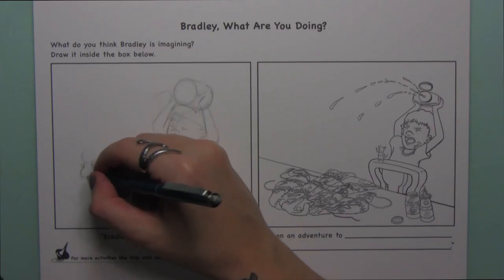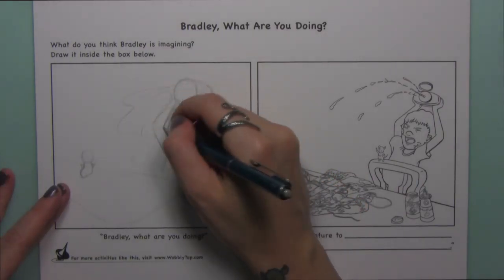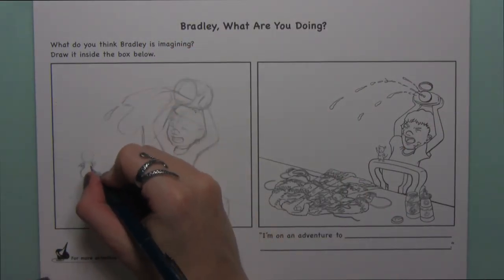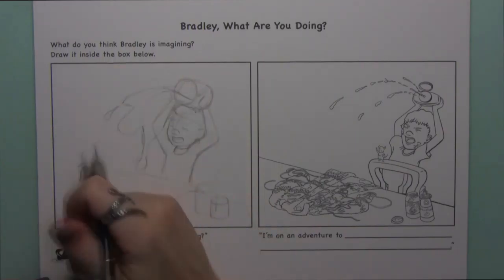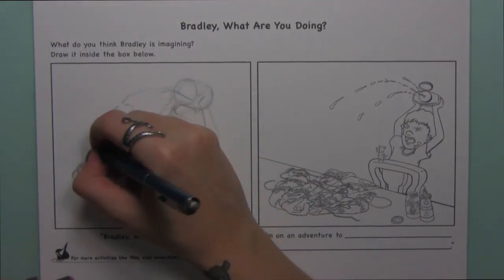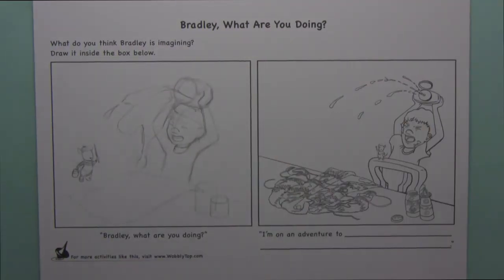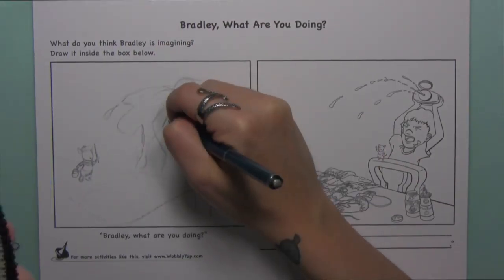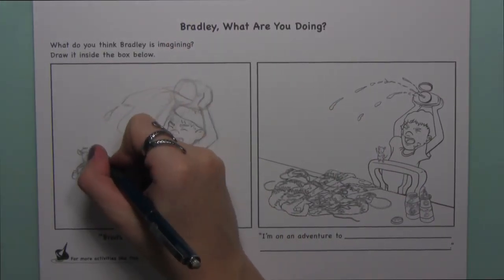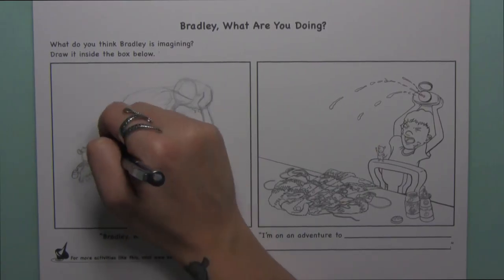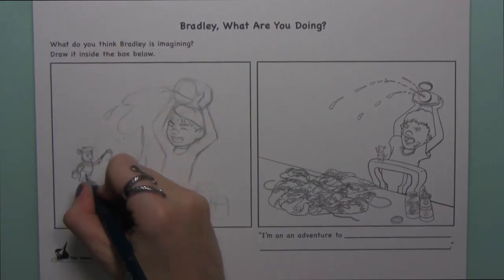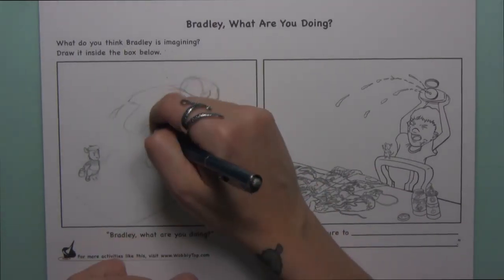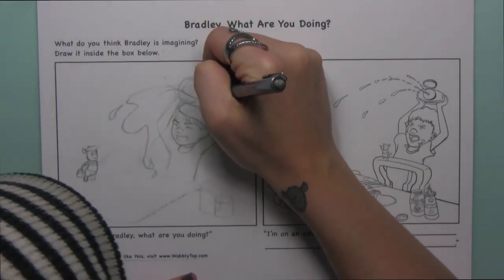For those of you who don't know, Wobbly Top's first book, Bradley What Are You Doing?, is a story about a mischievous little boy named Bradley and the adventures that he goes on in his imagination and the trouble that he gets into in the real world because of them. The setup of the book is you see one page showing the adventure Bradley's on in his imagination, then his dad says 'Bradley what are you doing?' and you turn the page and see what trouble Bradley's gotten into in the real world.